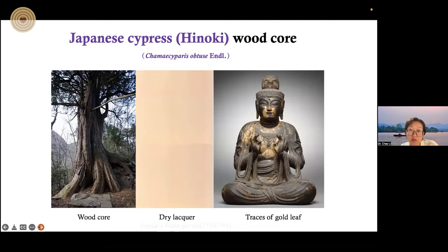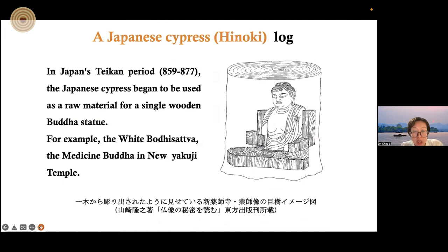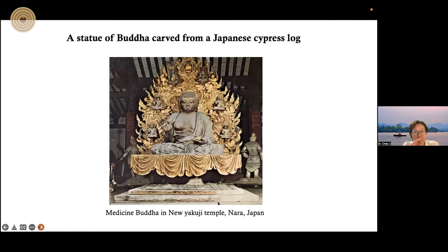This is the camphorwood, and we can see a Buddha made from camphorwood located in Haurinjin temple in Japan, dating from the Asuka period. This is the Japanese cypress woodcore, and we can see from the figure that the Buddha is made from the Japanese cypress woodcore — this is the old Buddha. In the Japanese Nara period, Japanese cypress began to be used as raw material for single wooden Buddha statues. For example, the white Buddha and the medicine Buddha, as we can see in the figure. At this time, the Japanese cypress used in Buddha statues changed from the woodcore to the log.